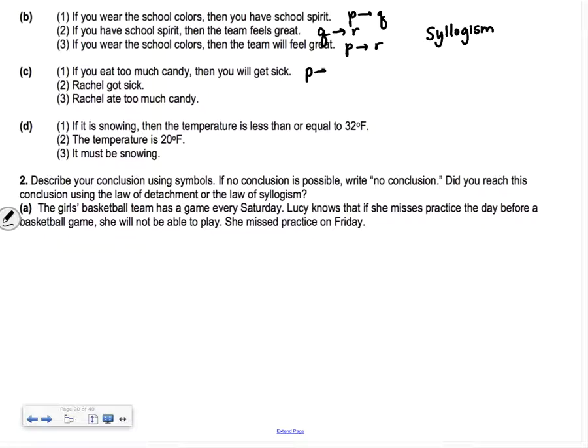If you eat too much candy, then you will get sick. Rachel got sick. That's the Q, that's the conclusion. That does not necessarily mean that P had to happen. We know that P implies Q, but if P doesn't happen, that doesn't mean that Q happened. We didn't know what happened for Rachel to get sick. She could have eaten too much candy, or she could just be sick. We don't know what's causing her to be sick. So this is invalid.